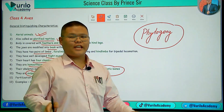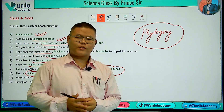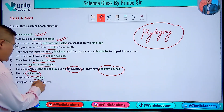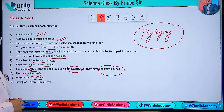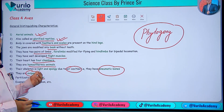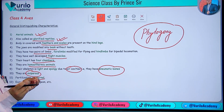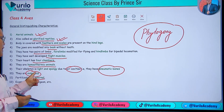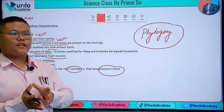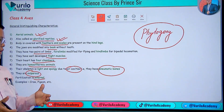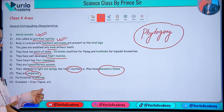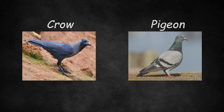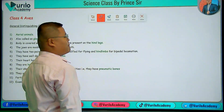Birds are oviparous — egg-laying animals. Fertilization is internal; the male gamete and female gamete fuse inside the female's body, so it is considered internal fertilization.